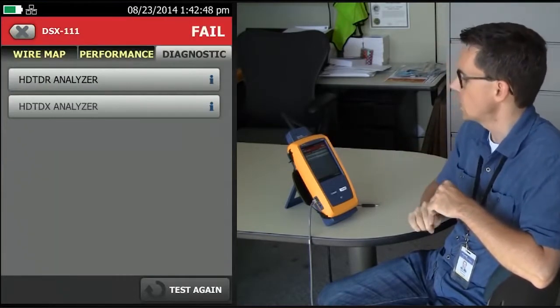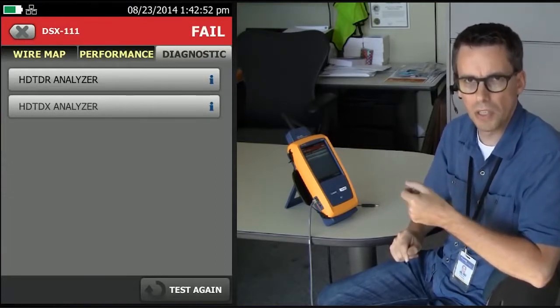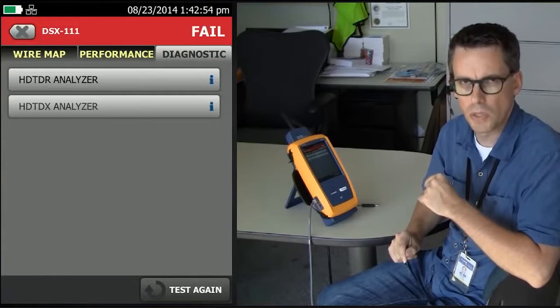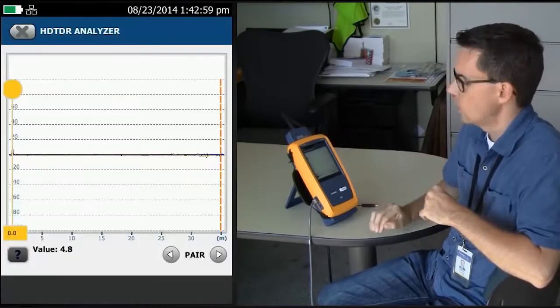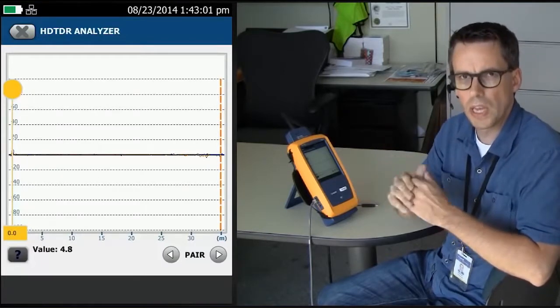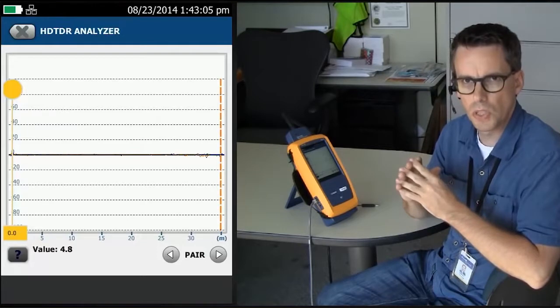Let me tap on Diagnostics. We've got our HDTDR analyzer, our High Definition Time Domain Reflectometer Analyzer, or Return Loss. That's the tool that we're going to use here, which allows us to look down the cable and see where the impedance anomalies are, the ones that are causing the return loss.